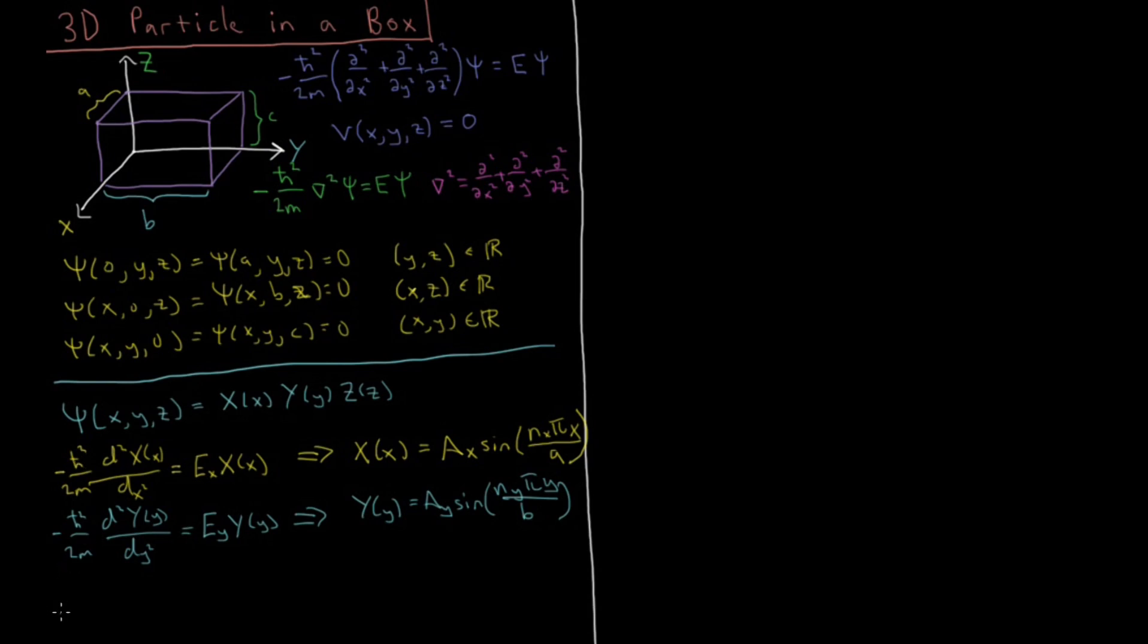And then just to round it all out, let's write down z just for good measure, even though it's quite anticlimactic, and you can probably already guess what this is going to end up being. Equals an energy for z, which leads to the analogous solution for z, that a normalization constant times a sine of nz pi position z over c.